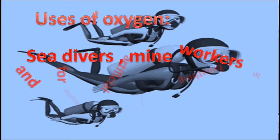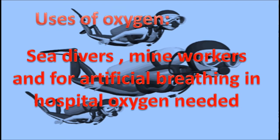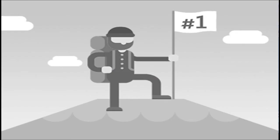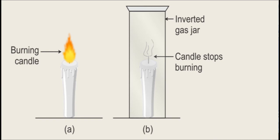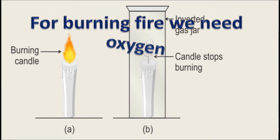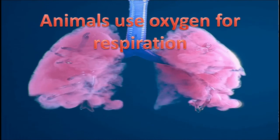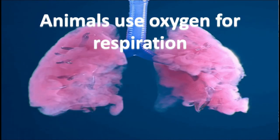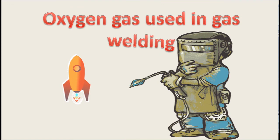Uses of oxygen: oxygen is needed by sea divers, mine workers, and for artificial breathing in hospitals. Mountaineers need oxygen when climbing high hills. Oxygen is a supporter of burning, so it is needed for fire. Animals need oxygen for respiration — animals use oxygen from air during respiration. Oxygen gas is also used in gas welding.